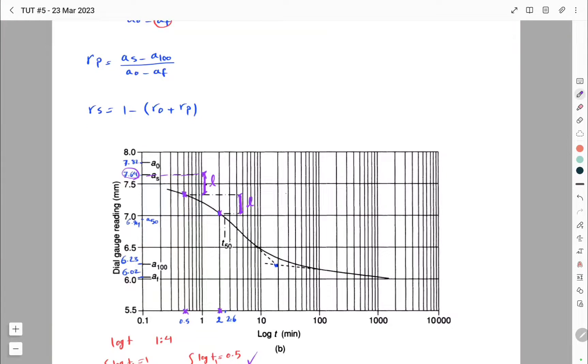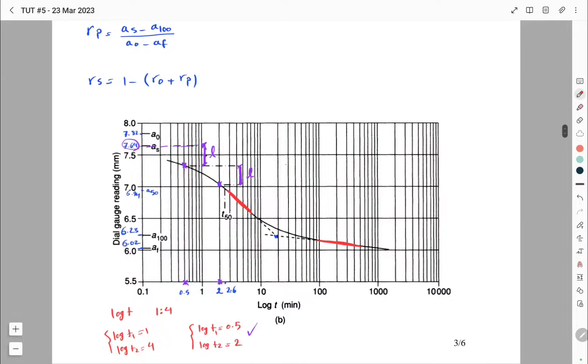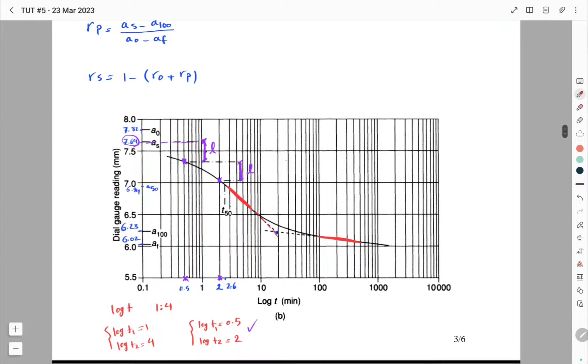The next value that we have to determine is a100. This log time plot has two straight sections: this is the first straight section and this is the second one. We have to extend these two parts until they cut each other, and the intersection point would correspond to our a100. So the value of a100 is 6.23.